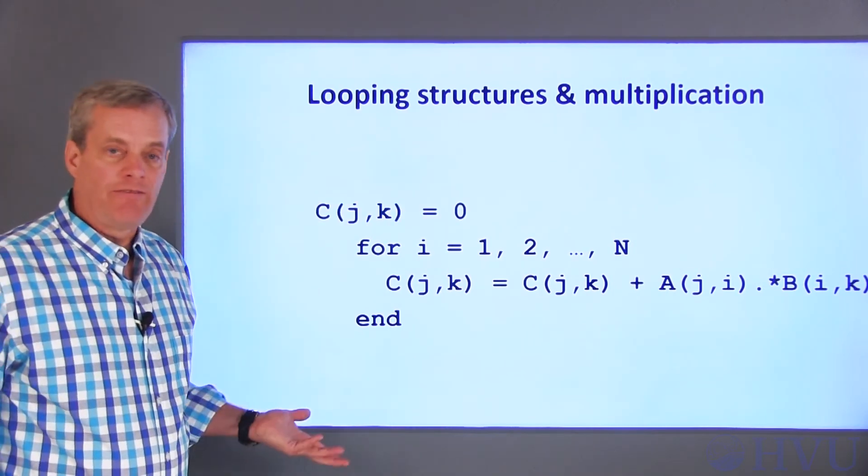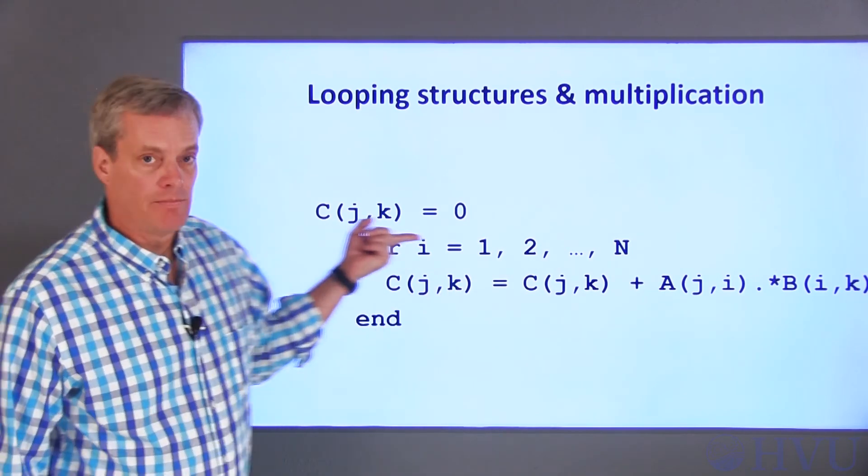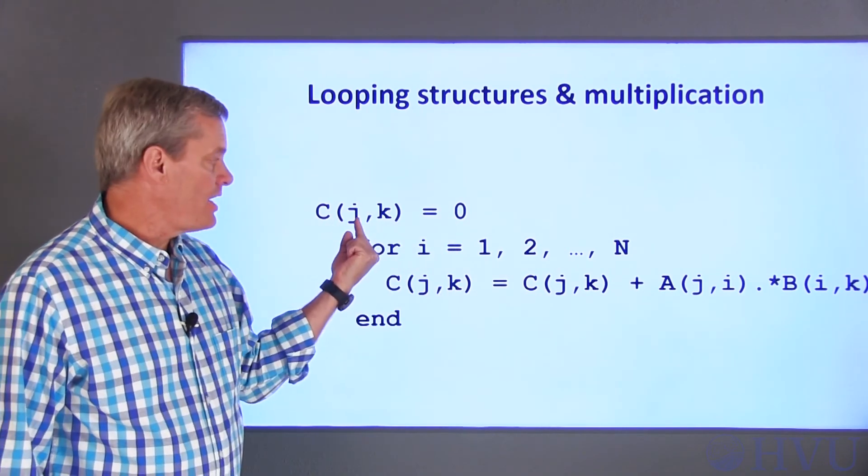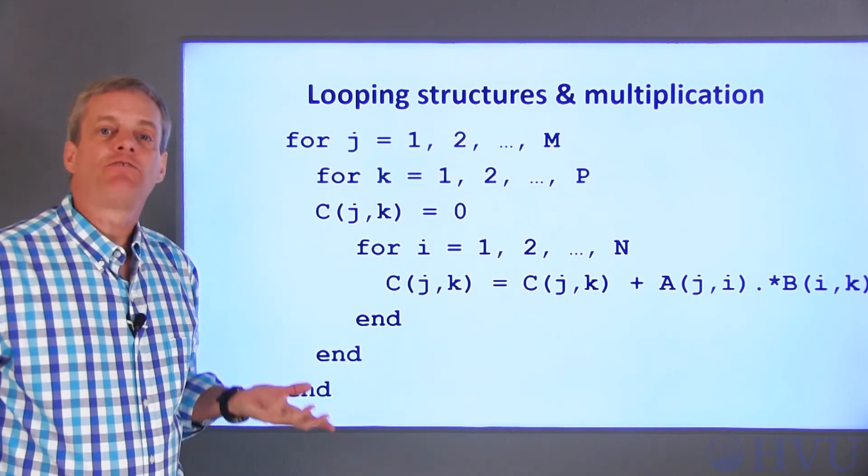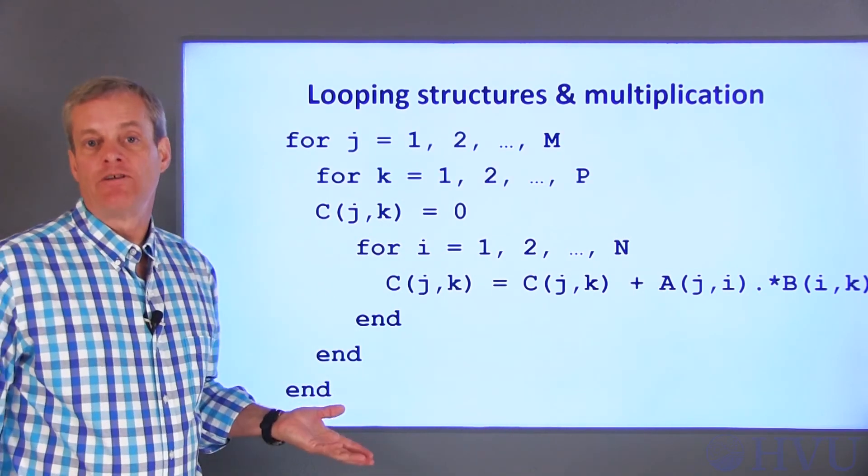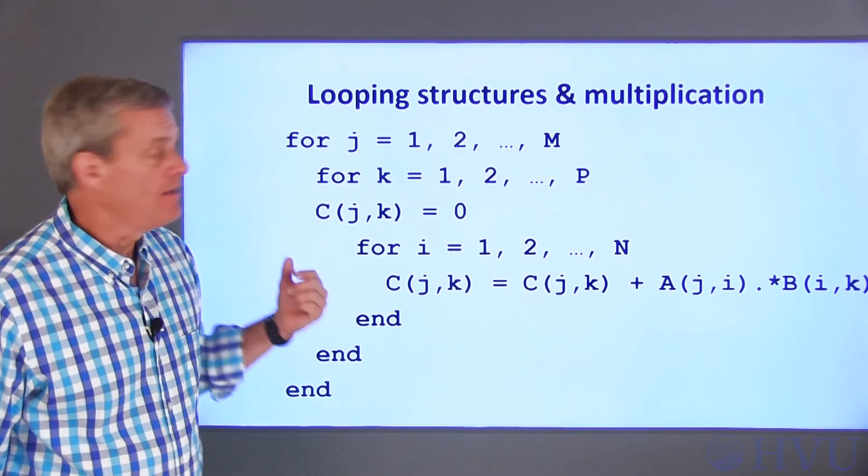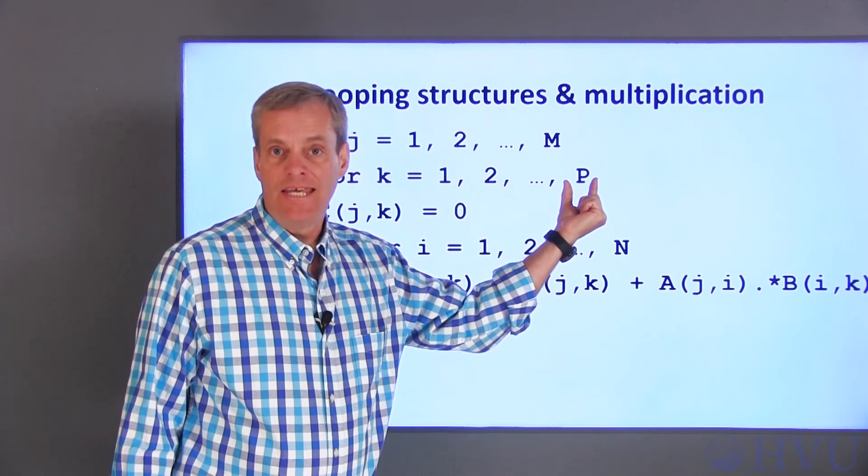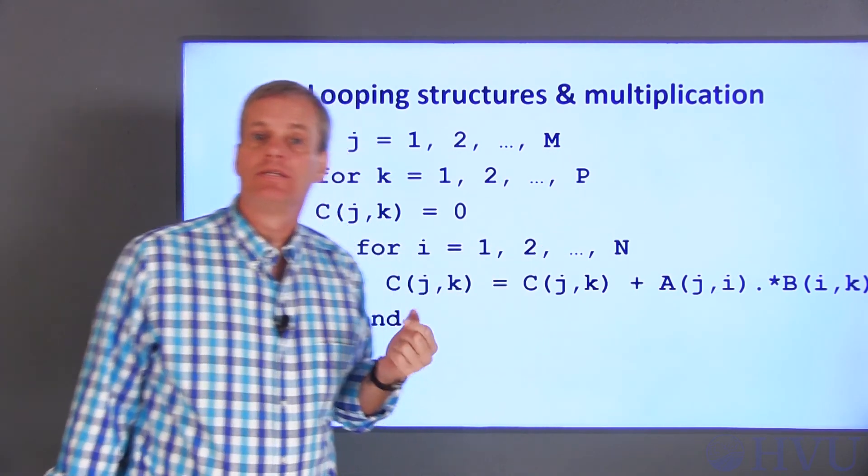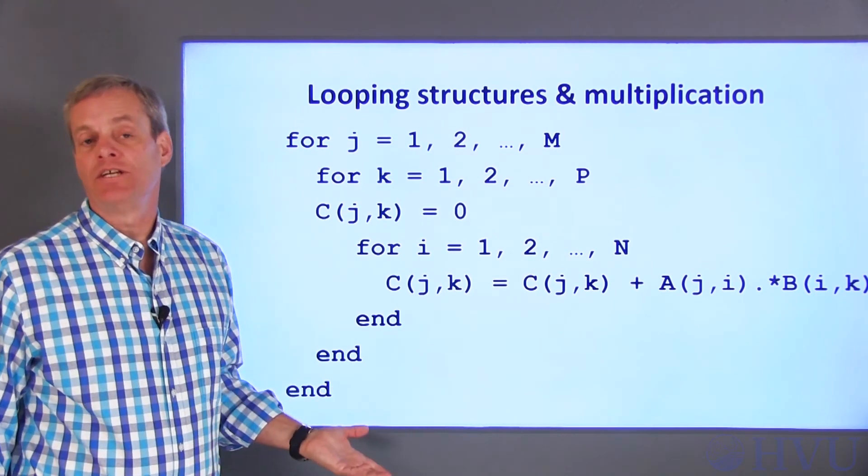Since I'm performing a cumulative sum of these elements, I need to initialize the element of C at the Jth row and Kth column to zero. Now I have to perform this inner product for every combination of the rows in matrix A and the columns in matrix B. So A has M rows and B has P columns. Since this is our most complicated case so far, I'll demonstrate its implementation in MATLAB.